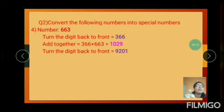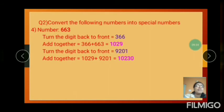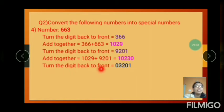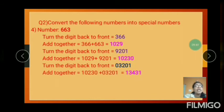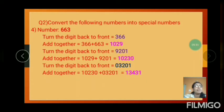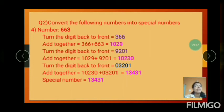Turn the digit back to front again: 9201. Add together: 1029 plus 9201 equals 10230. Then again turn the digit back to front: 03201, which is 3201. Add together: 10230 plus 3201. Answer is 13431.